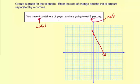So there's our graph representing the yogurt situation where you have eight containers of yogurt and you eat two a day.